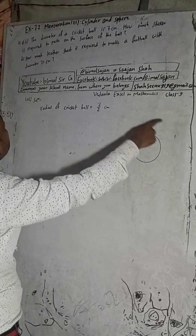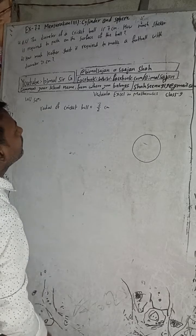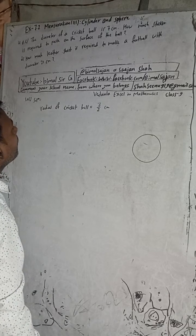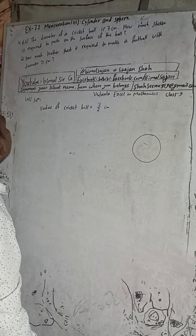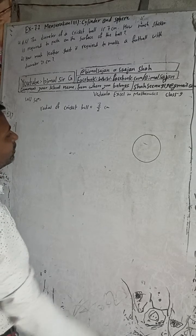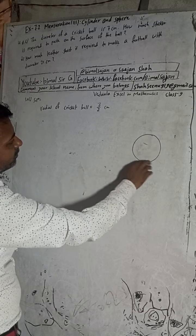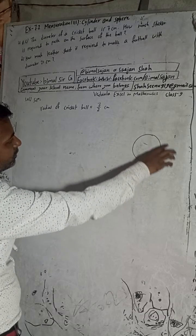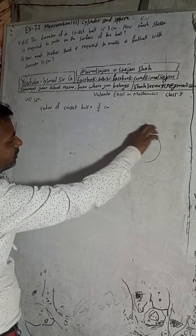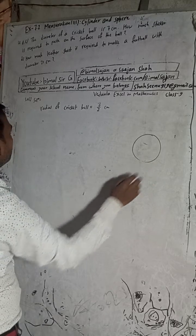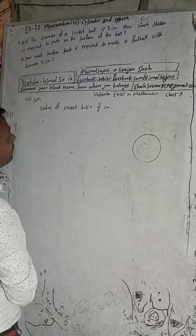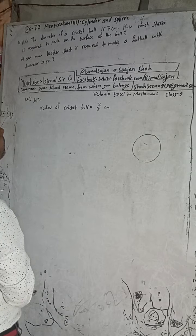This is our cricket ball. How much sticker is required to paste on the surface of the ball? To paste on the surface of the ball means we need the total surface area. So, total surface area — how much sticker do we need to stick?